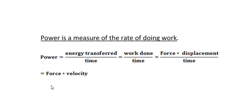So for example, if the engine of a car applies a force of, let's say, a thousand newtons to cause the car to move at a velocity of one meter per second, then the power the engine develops is a thousand times one. Therefore, it's equal to one thousand watts.